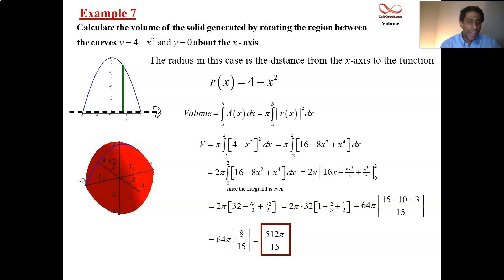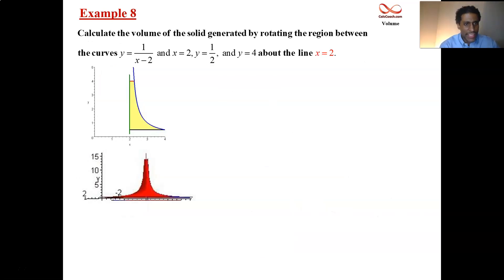In this next one, we have the task to calculate the volume of the solid that's generated by rotating the region between the curves y equals 1 over x minus 2, x equals 2, y equals 1 half, and y equals 4. Well, the hardest part actually is probably trying to draw this. But then we'll have something else maybe a little bit more difficult later about trying to find the radius. But we are rotating this about the line x equals 2.